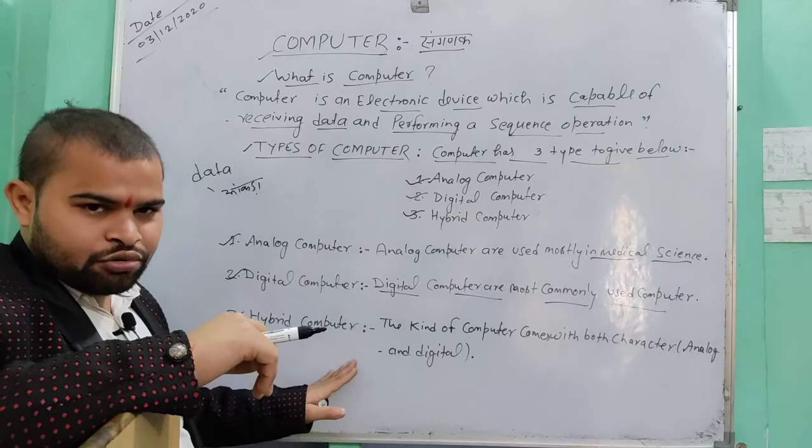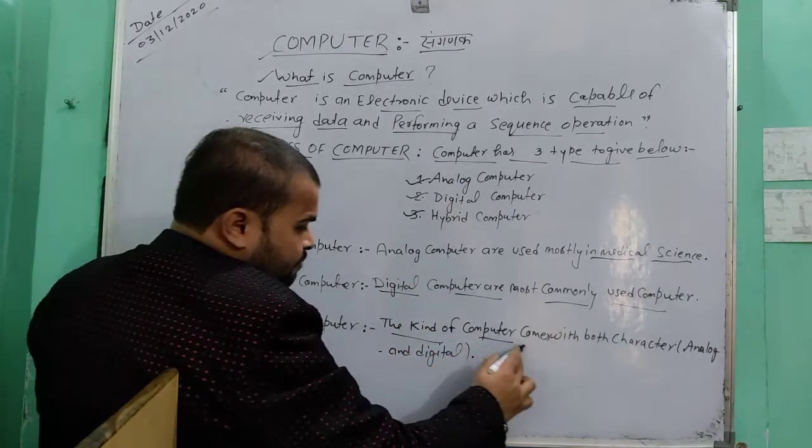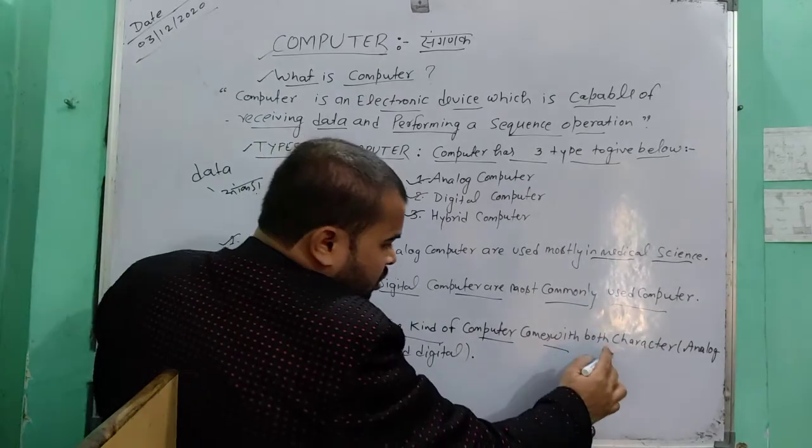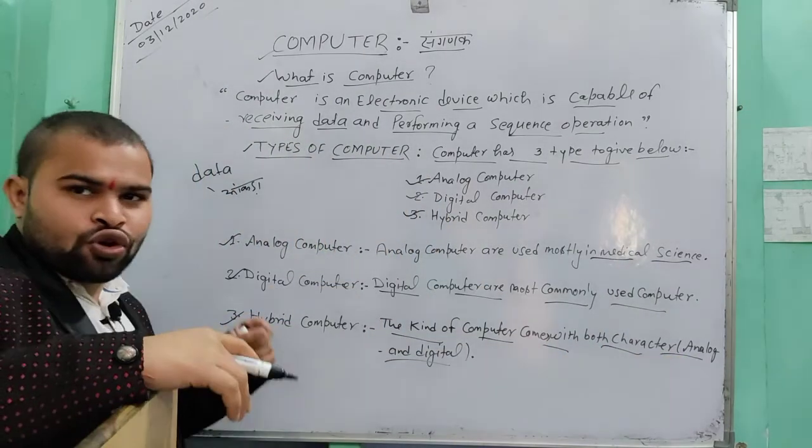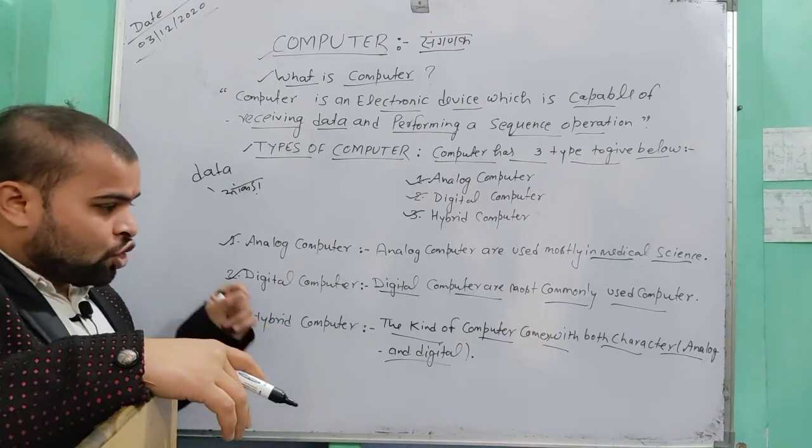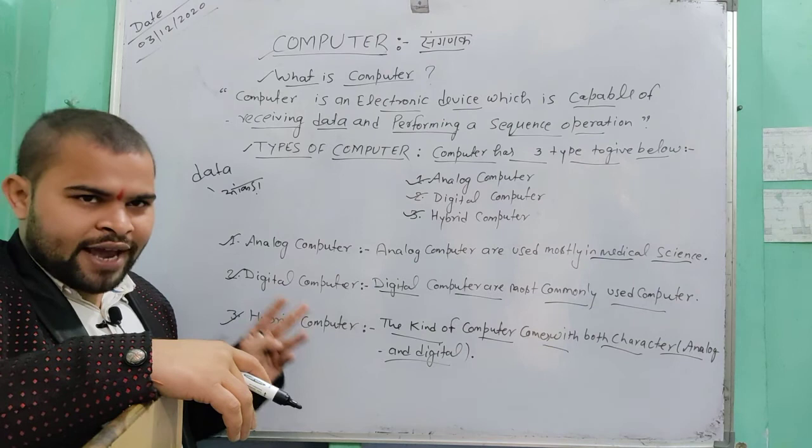And the third computer which comes to us is the hybrid computer. What is hybrid computer? The kind of computer that comes with both characters, analog and digital. So the two characters come to us. You can tell both the analog condition and the digital condition.